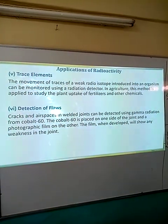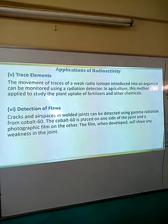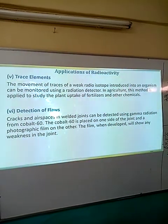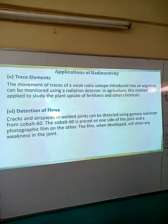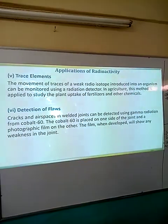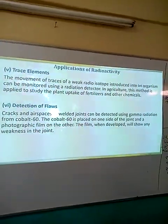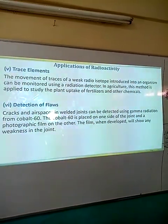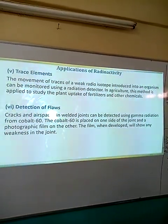The next application is on the detection of flaws. This happens when metallic structures are welded together. At the joints, in case there are some areas or regions that are not well welded, this can be detected by gamma radiation. It can detect areas where welding has not been done properly, and therefore it can be redone or done perfectly.